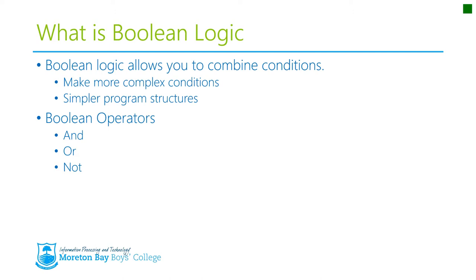We have three Boolean operators: AND, OR, and NOT. The rest of this video is about explaining how those three operators work.